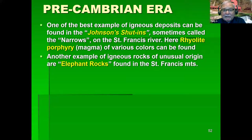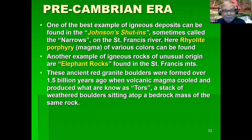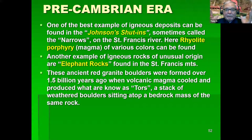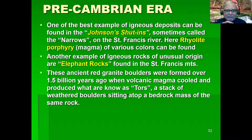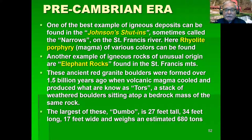Another example of these igneous rocks formed during the Precambrian are called tors, and they're found at the top of the St. Francis Mountains. They're just gigantic boulders. Young people didn't understand exactly where they came from — they were basically blown up out of these old ancient volcanoes and left on top of the mountain range. As the mountain range was eroded, these tors — these weathered boulders — were left sitting on top of the bedrock. For years people couldn't figure out what they were; ancient Indians of the area used to worship these things, thinking they were gods. The biggest one is called Dumbo — he's 27 feet tall, 34 feet long, 17 feet wide, and weighs an estimated 680 tons of solid rock.